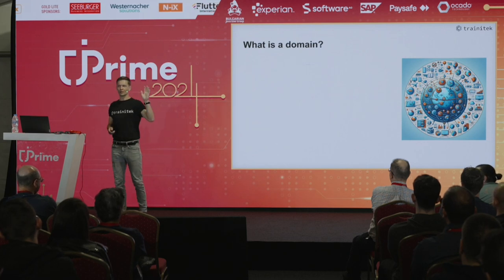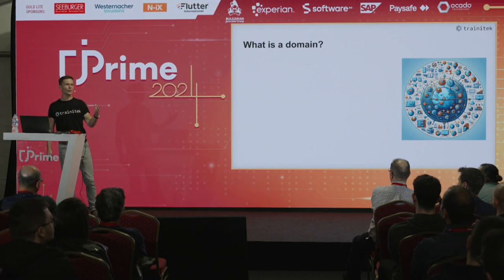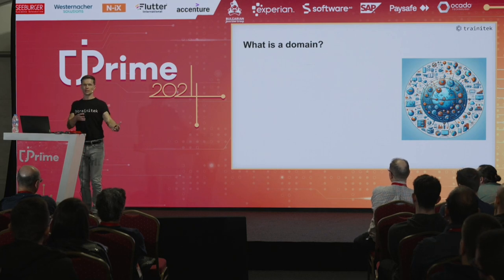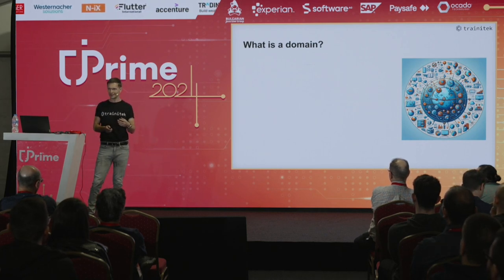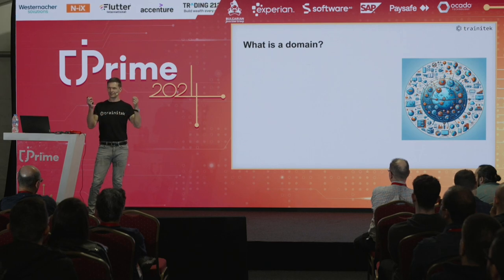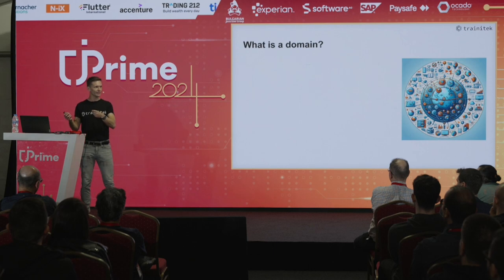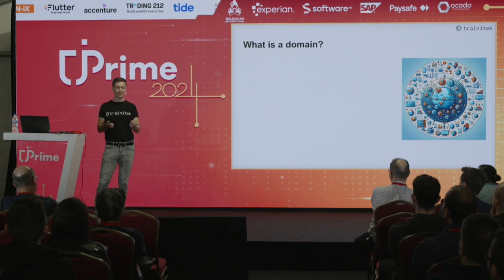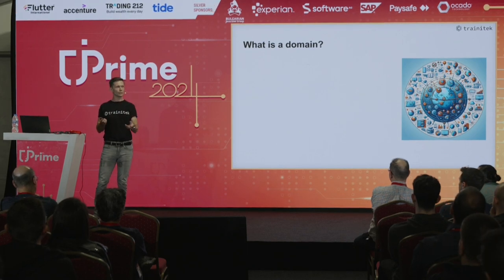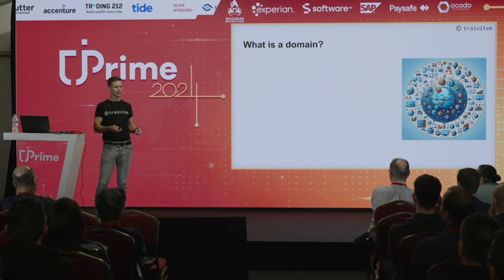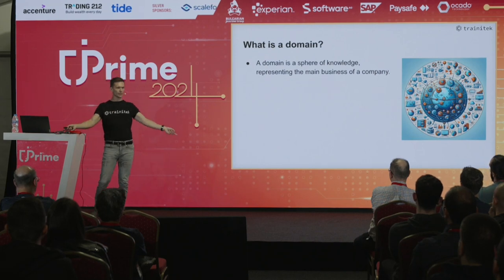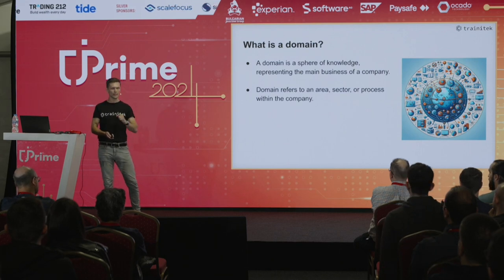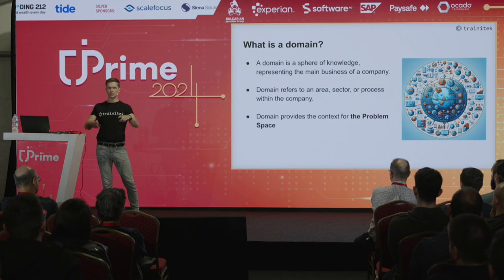Do you know what a domain is? Do you know the difference between domain and model? This is important. When I first read the book I thought I understood it all, then something didn't click. I read it again, then a third time and watched Eric Evans videos — and finally understood. The domain is essentially a sphere of knowledge representing the main business of a company, or an area, sector, or process within a company. It's essentially the problem space.